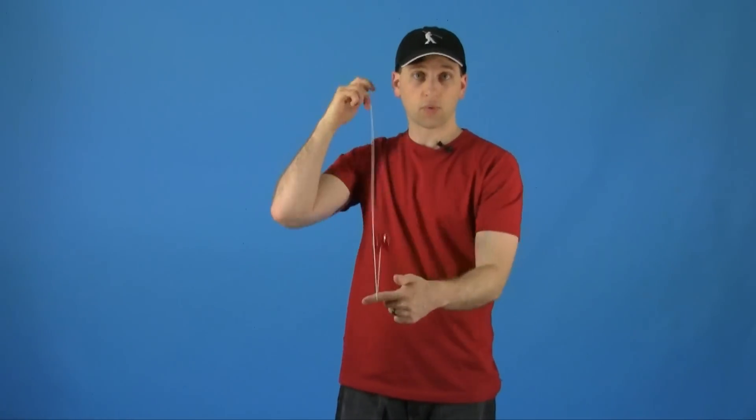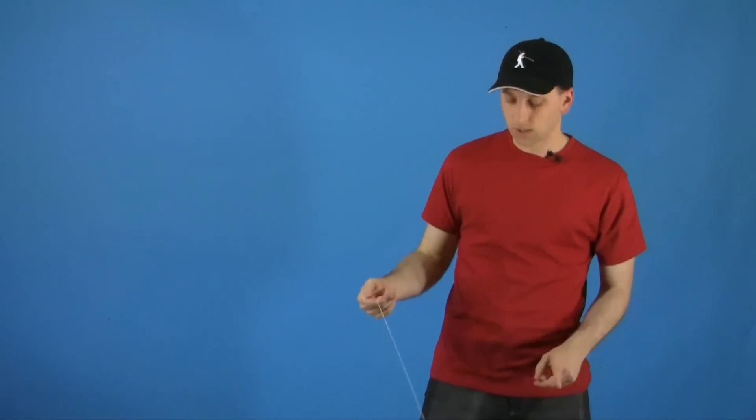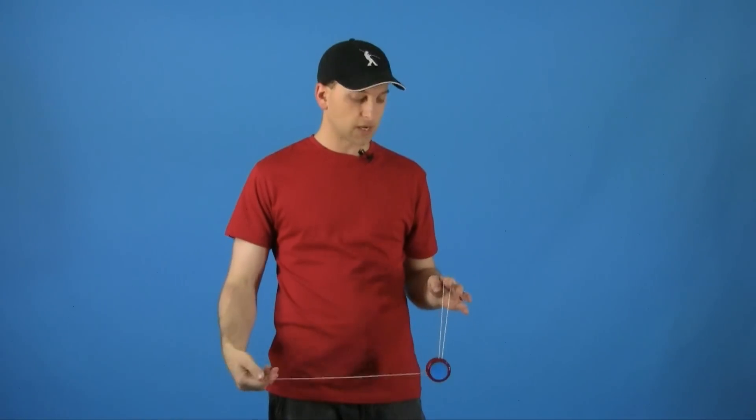Like I already showed you, if you want to start with a Forward Toss you can do a Regeneration right into the Forward Mount. Maybe you want to do a Forward Toss off to the side, you can do your Regeneration right into your side mount.